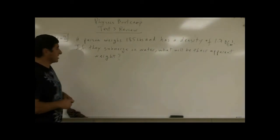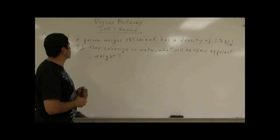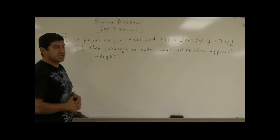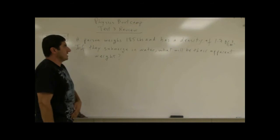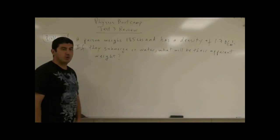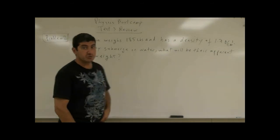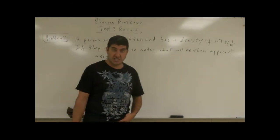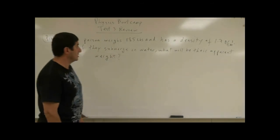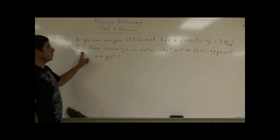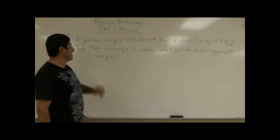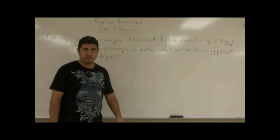Problem 2, a test 3 review. A person weighs 185 pounds and has a density of 1.7 grams per cubic centimeter. If they are submerged in water, what will be their apparent weight?